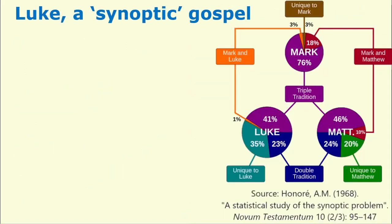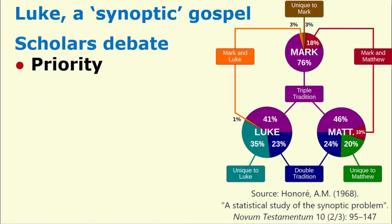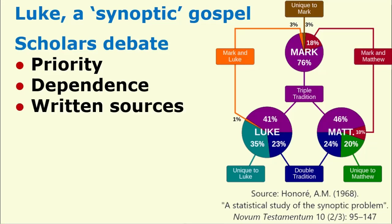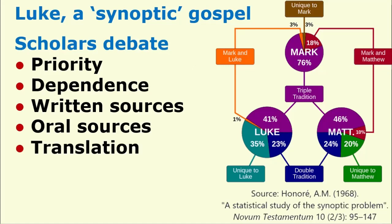Luke is a synoptic Gospel — that is, it shares a lot of material in common with the Gospels of Matthew and of Mark. Scholars discuss and debate continuously the priority of these books: which was written before the other — Mark, Matthew, Luke — and their dependents. How much does Luke depend upon Mark and upon Matthew for material? And other written sources from which Luke may have drawn. And what about oral sources? Did Luke interview eyewitnesses during his sojourn in the Holy Land? And translation — was any of these Gospels first written in Aramaic, and later translated into Greek? And redaction — how much has each Gospel been edited in the early centuries?